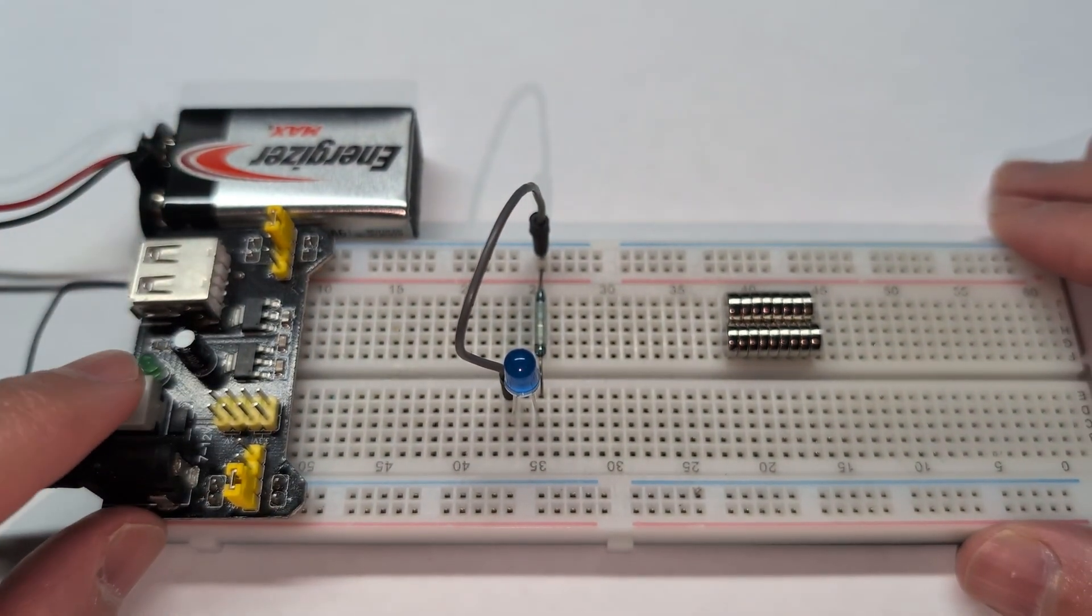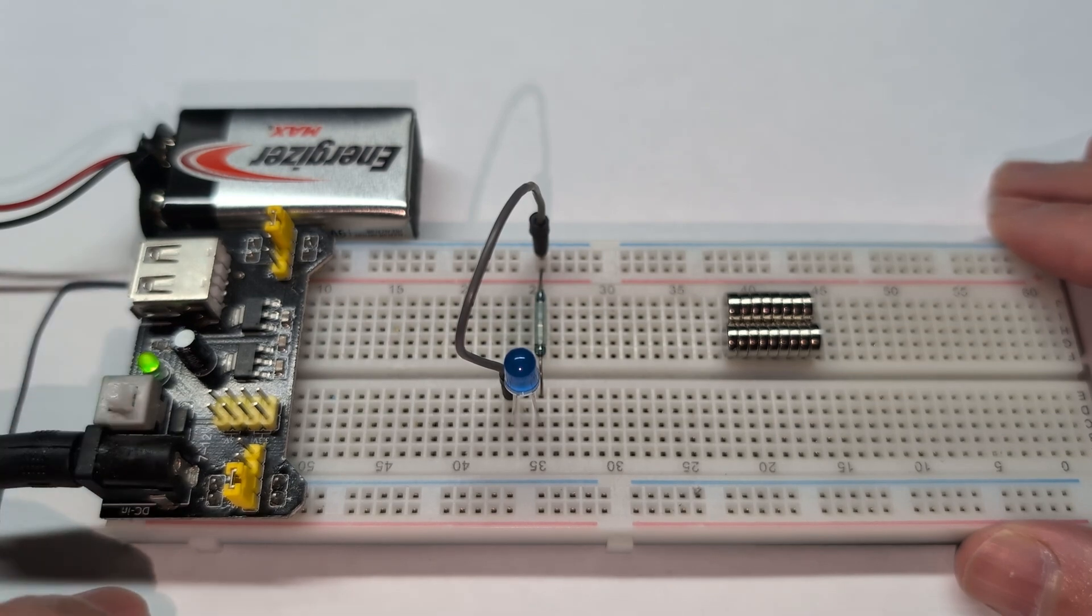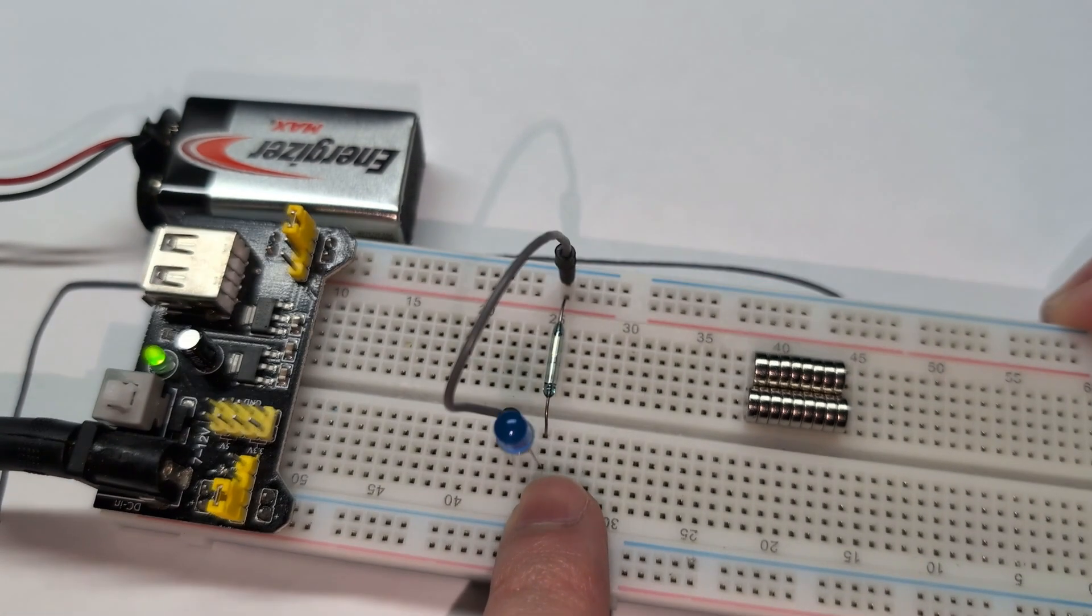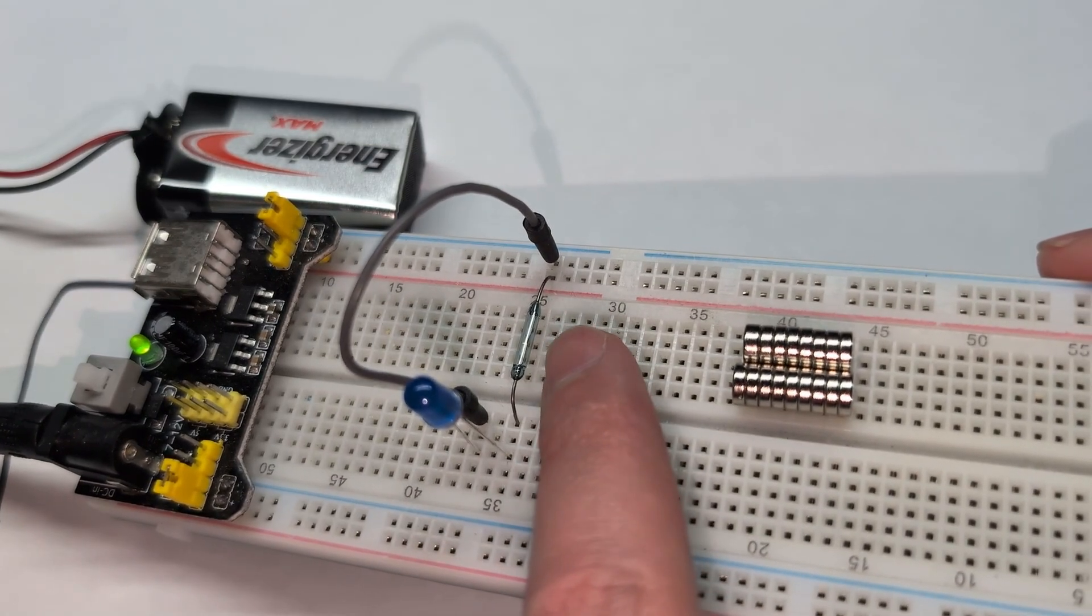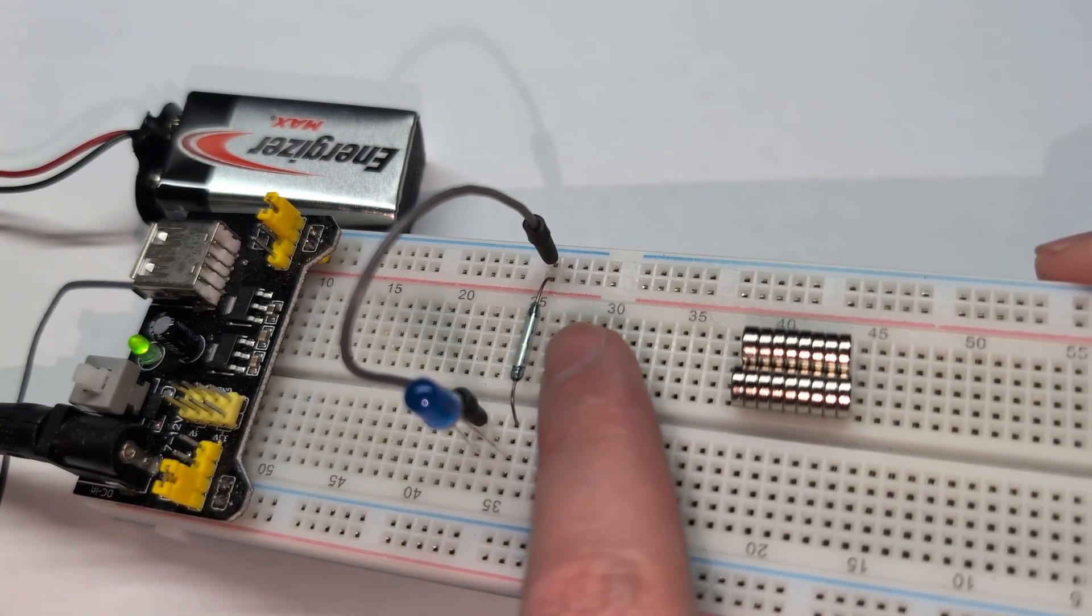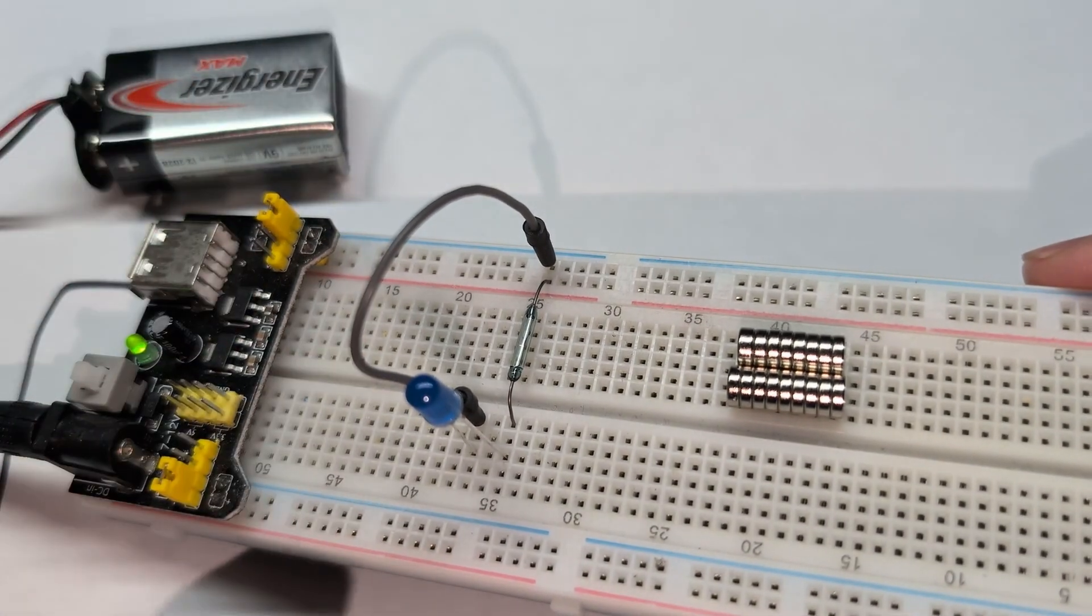I have one here on the breadboard. This is just my power supply, so I'm going to turn that on. As you can see here, I have an LED and I have the switch or the magnetic reed switch. This is just the power and I have an LED to demo how this works.